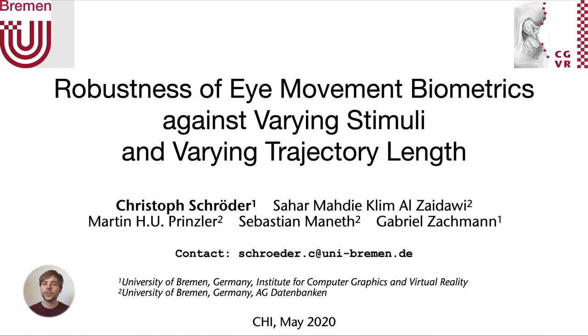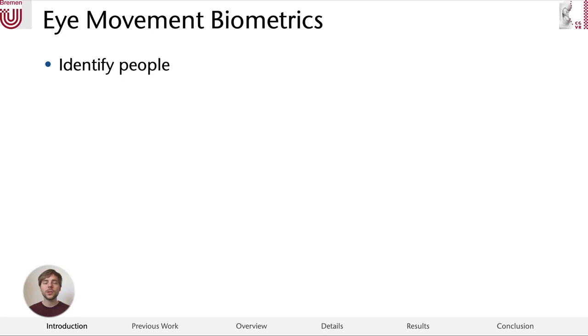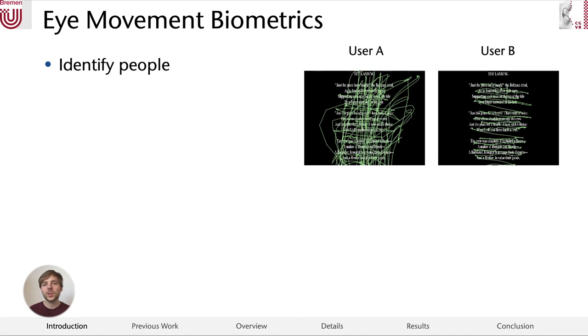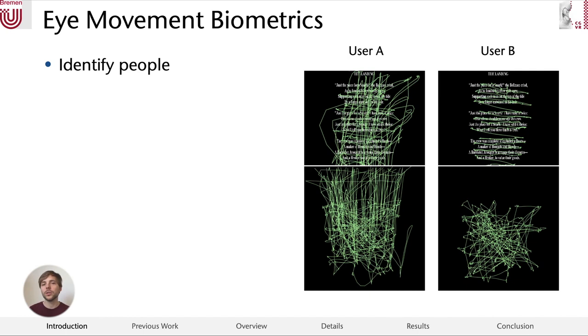In eye movement biometrics, we try to identify people solely on the way they gaze at things. On the right-hand side, you can see that two users that read the same poem have vastly different gaze patterns. The same is true when the task is not to read a poem but follow a random moving dot on a screen.